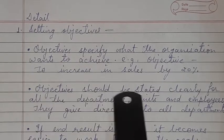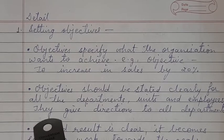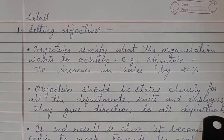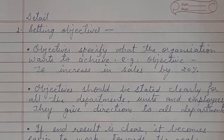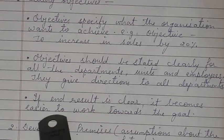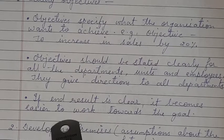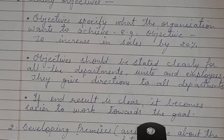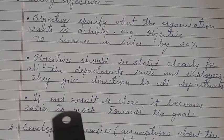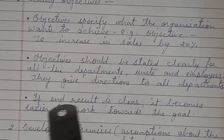Objectives should be stated clearly for all departments, units, and employees, so that they may give direction to all departments. If the end result is clear, it becomes easier to work towards the goal. Just as if you decide now what you want to become — like CA, lawyer, accountant, or banker — then all your efforts would be in that direction only, and you would prefer to take coaching in that particular field. So the end result should be clear.